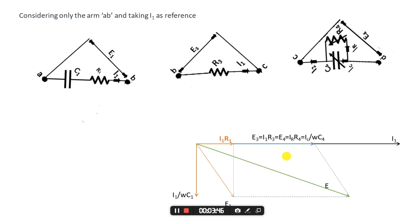We can draw IR here. The current IC will lead this voltage by an angle of 90 degrees, so it will be along the y-axis. The vector sum of IC and IR will give us the total current in arm DC, which is I2.